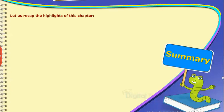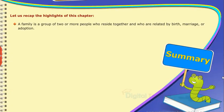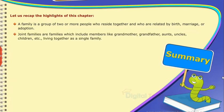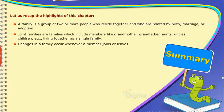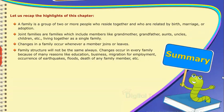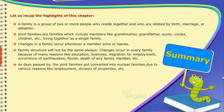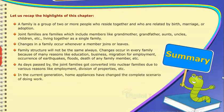Let us recap the highlights of this chapter. A family is a group of two or more people who reside together and who are related by birth, marriage or adoption. Joint families are families which include members like grandmother, grandfather, aunts, uncles, children, etc., living together as a single family. Changes in a family occur whenever a member joins or leaves. Family structure will not be the same always — changes occur because of education, business, migration for employment, earthquakes, floods, death of a family member, etc. As days passed by, joint families got converted into nuclear families due to reasons like employment and division of properties. In the current generation, home appliances have changed the complete scenario of doing work.